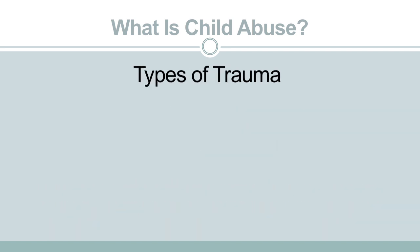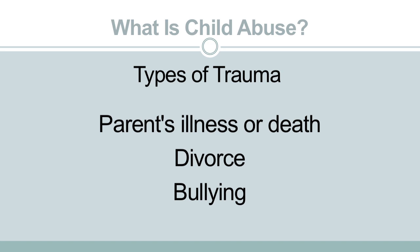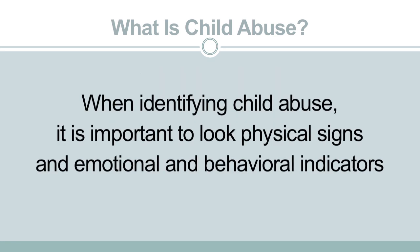Child abuse is a form of trauma. There are several types of trauma a child may face — a parent's illness or death, divorce, bullying — and these types of trauma can cause emotional and behavioral symptoms. As another form of trauma, child abuse can also lead to similar emotional and behavioral difficulties. When identifying child abuse, it's important to not only look at physical signs, but also pay attention to emotional and behavioral indicators to form a complete picture of what may be happening to a child.